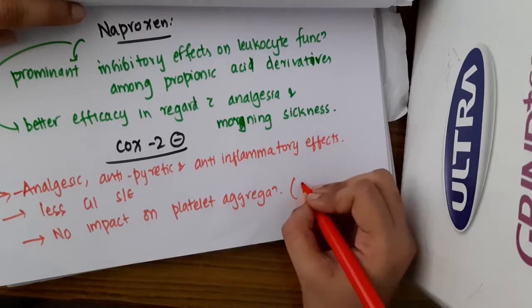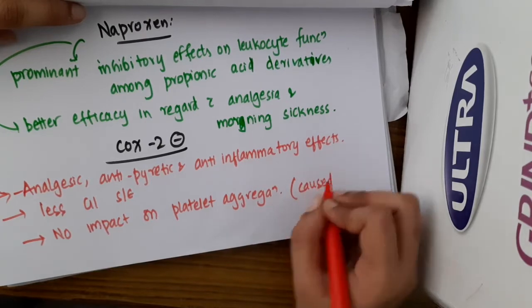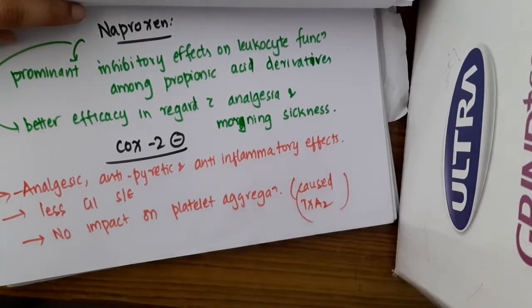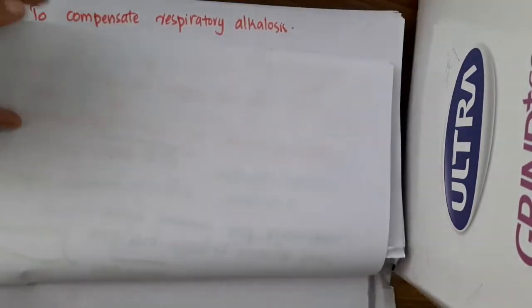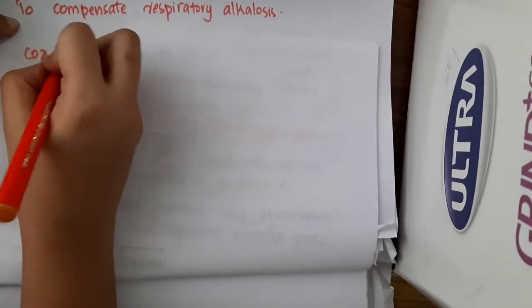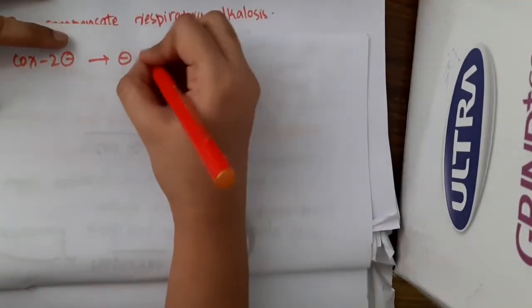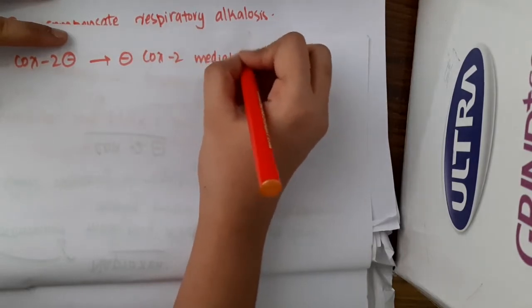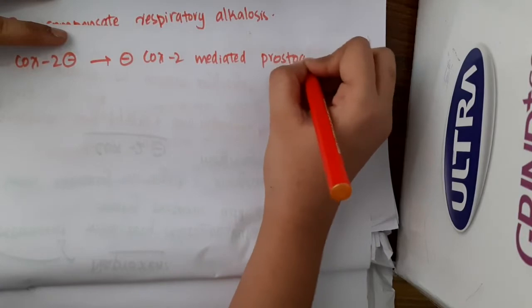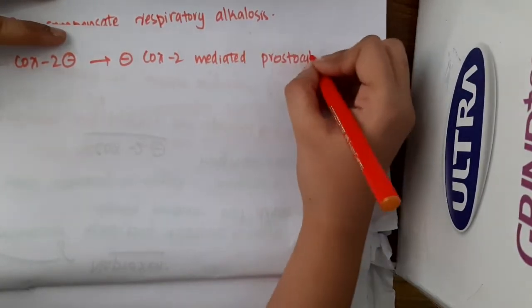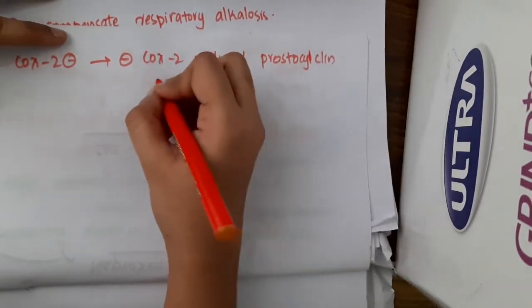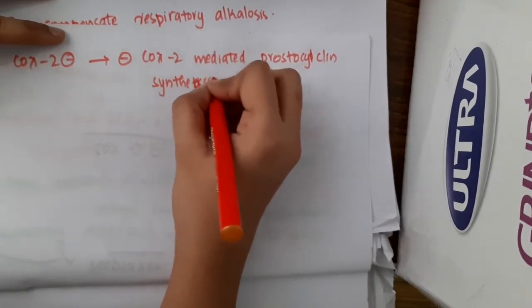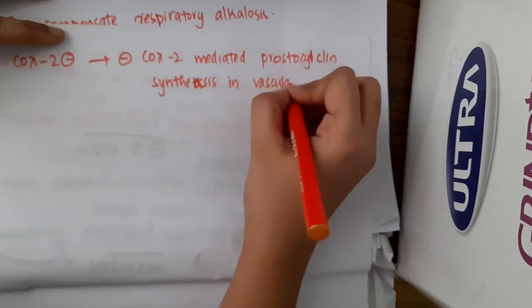Platelet aggregation is normally caused by thromboxane A2, and COX-2 inhibitors have no impact on this. However, these COX-2 inhibitors will inhibit the COX-2 mediated prostacyclin synthesis in the vascular endothelium.